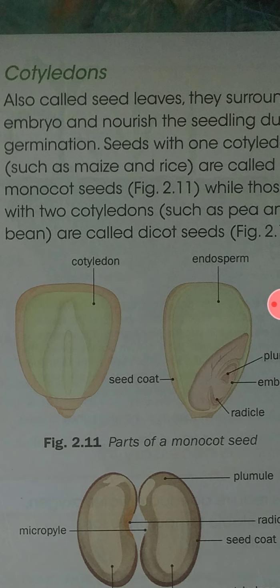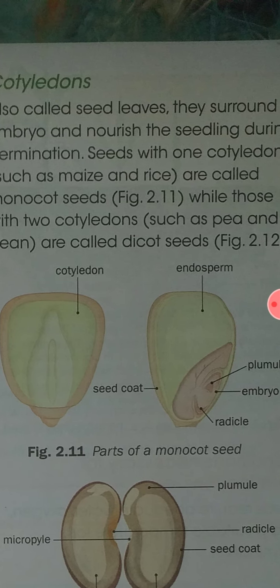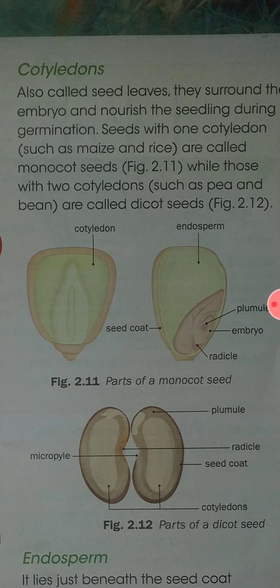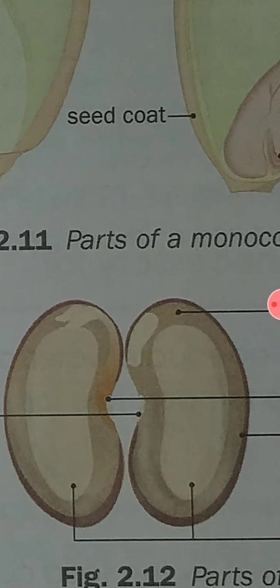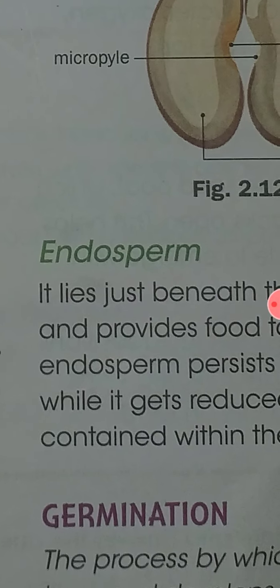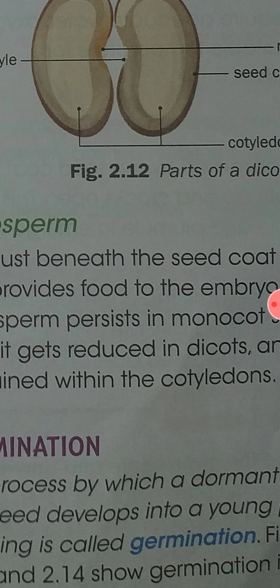The seed also contains seed leaves called cotyledons, which surround the embryo and nourish the seedling during germination. A seed with only a single cotyledon is called a monocot — examples include maize and rice. A seed that can be divided into two equal halves, containing two cotyledons, is known as a dicot seed — like the pea. The endosperm lies just beneath the seed coat and provides food to the embryo. It persists in monocot seeds but is reduced in dicot seeds.